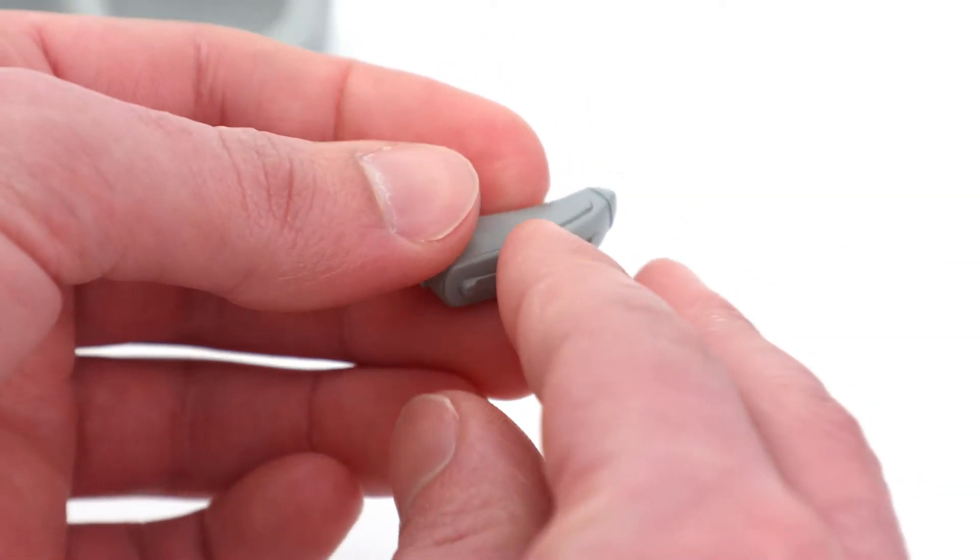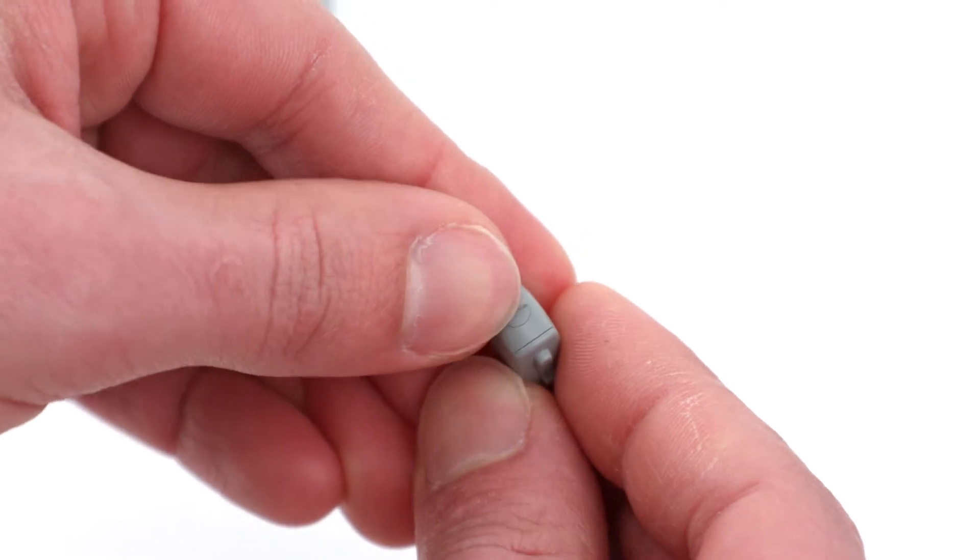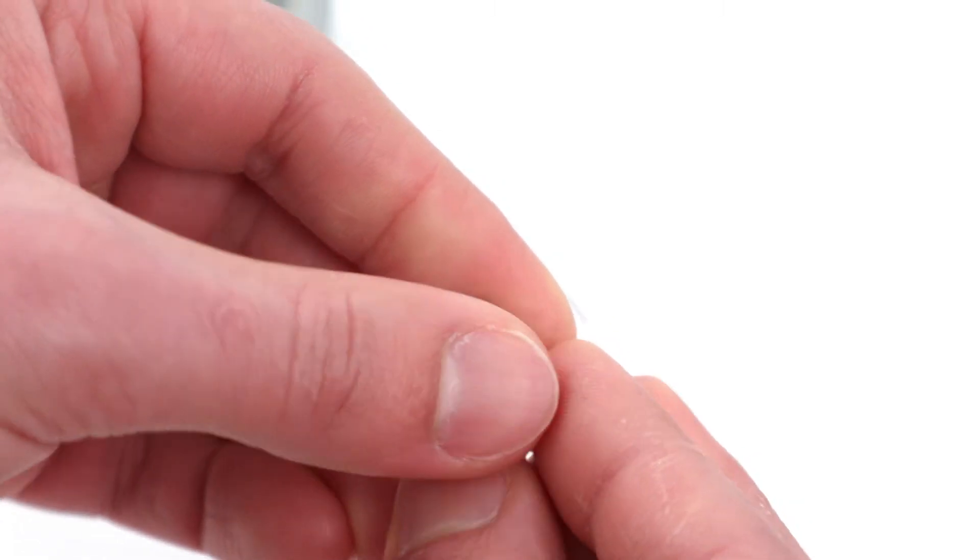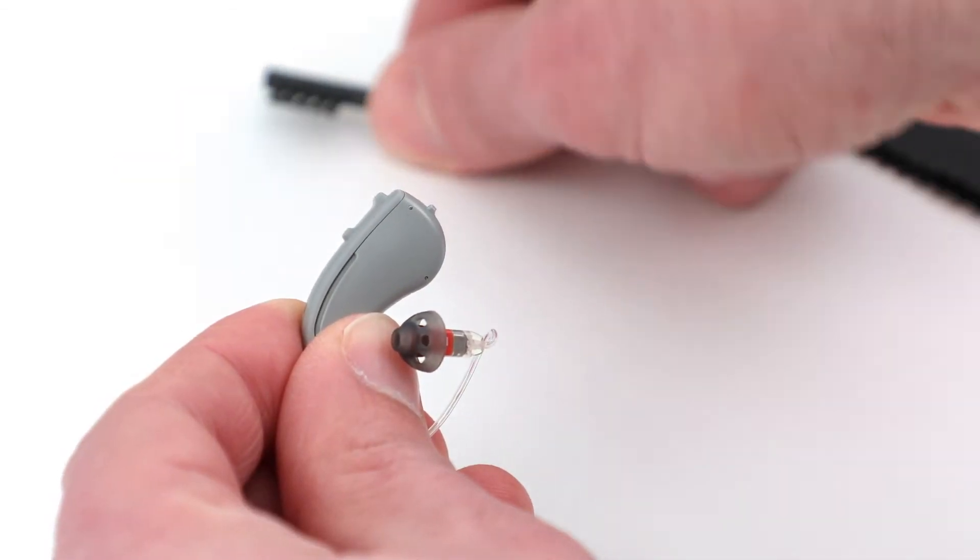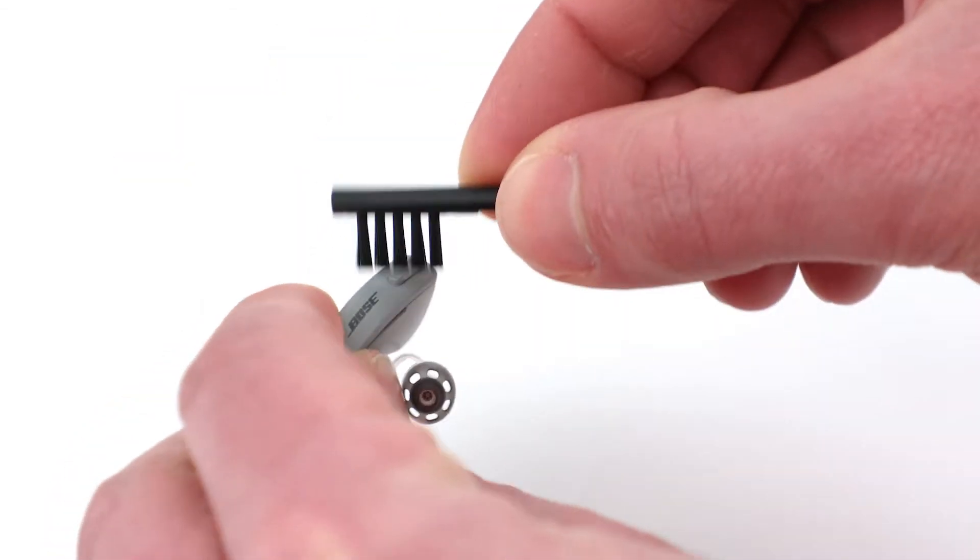To power off the hearing aid, partially open the battery door until you feel a click. Partially opening the battery doors will power the hearing aids off, preserve battery life, and prevent the batteries from falling out.